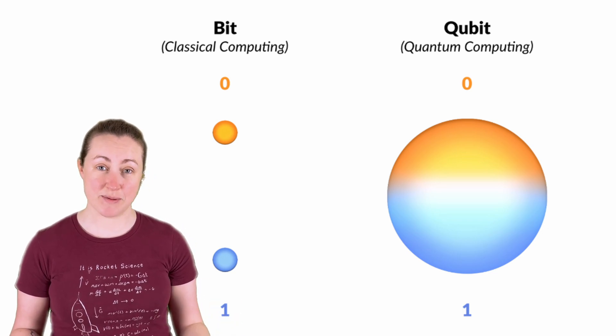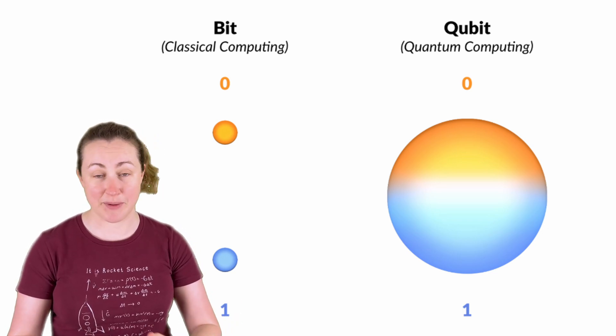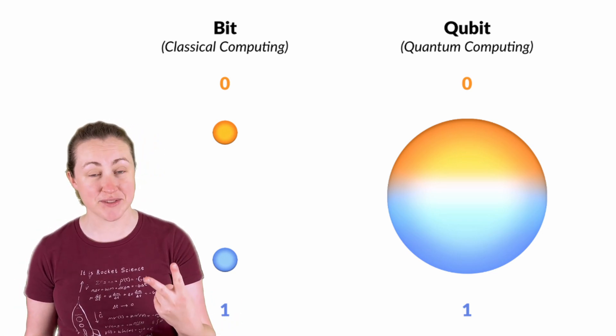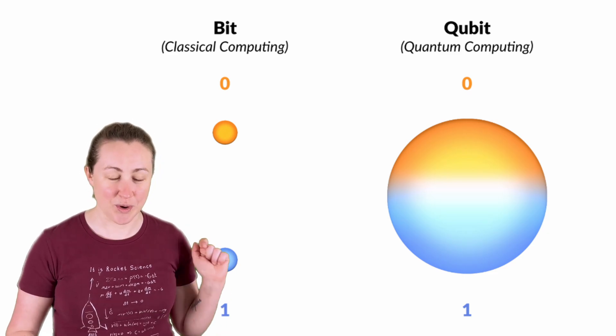In your computer, data is represented as bits. These bits are in a binary form, so only two options, 1 and 0. Remember that because we're going to come back to this image.